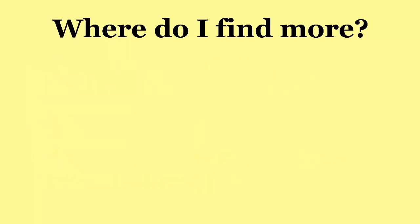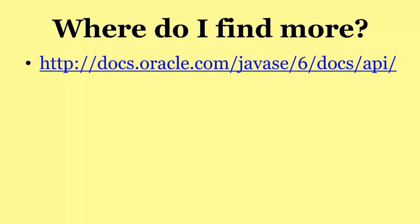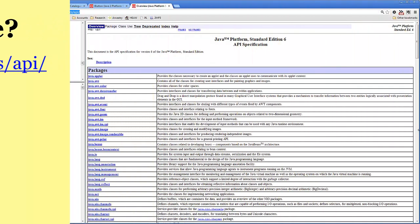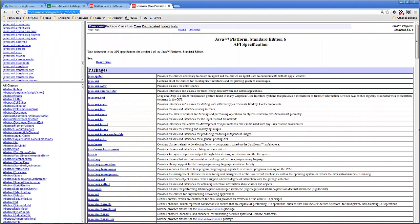So where do you find out about the others? Where can you find more? Well, you go to docs.oracle.com/javase/6/docs/api. If you do that, you'll go to this web page, and here you'll see all the APIs that are available — all the packages. And there are a lot of them.